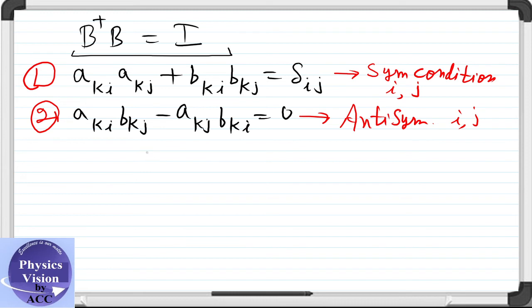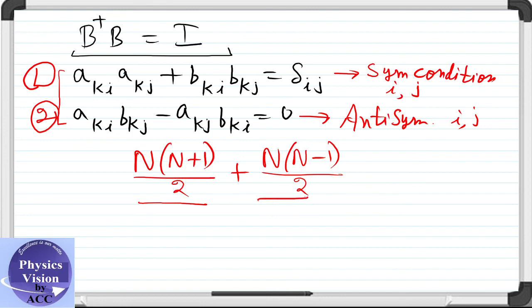The number of independent components of a symmetric matrix are n(n+1)/2 and antisymmetric are n(n-1)/2. Since the total matrix needs to satisfy both of these conditions, the total number of independent components comes out to be n square.